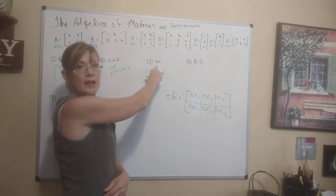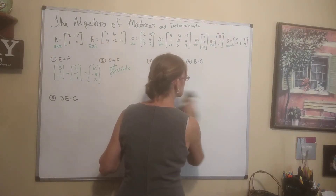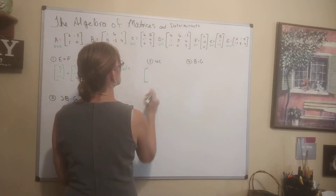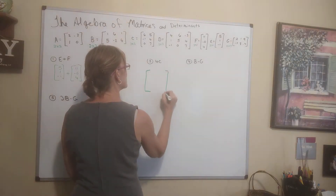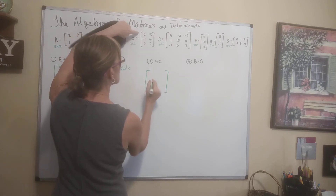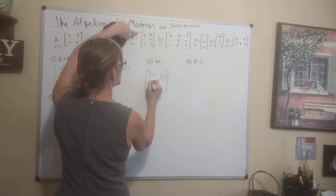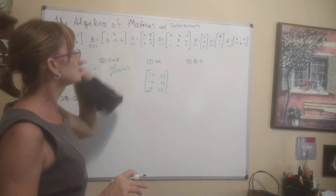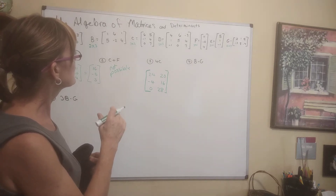4 times C is the scalar 4 times matrix C, which is 3 by 2. You multiply 4 by each element: 4 times 6 is 24, 4 times 5 is 20, 4 times negative 1 is negative 4, then 16, 0, and 20. The resulting matrix is still 3 by 2.